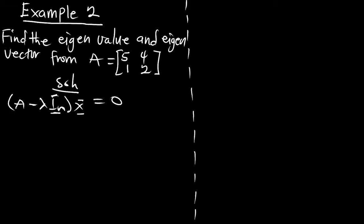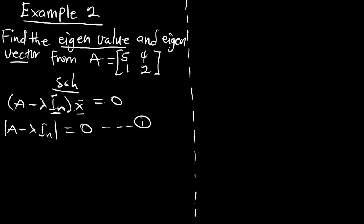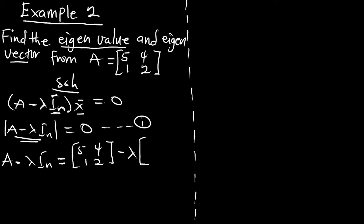In situations like this we must first find the eigenvalue in order to find the eigenvector, and to find the eigenvalue we are going to say the determinant of this matrix is equal to zero. So now this is the equation we are going to use to find the eigenvalue. But before we find the determinant, let's first find what A minus lambda I_n is — that is going to be equal to the matrix A, which is [[5,4],[1,2]], minus lambda times the identity matrix [[1,0],[0,1]].